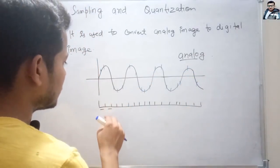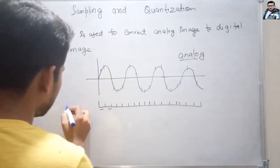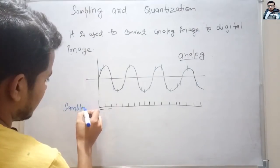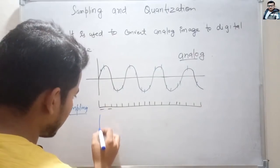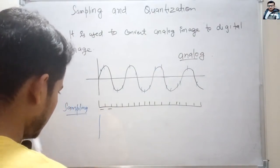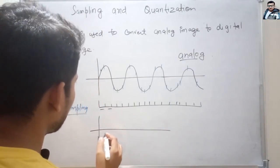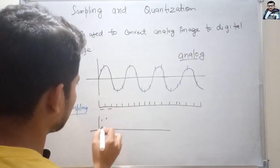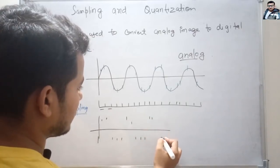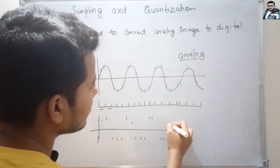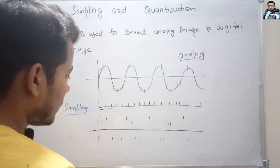The process of evenly dividing the wave is known as sampling. We divide it into evenly spaced parts, and after sampling the result is represented in the form of dots — discrete points along the wave.